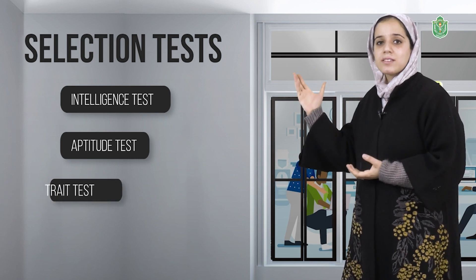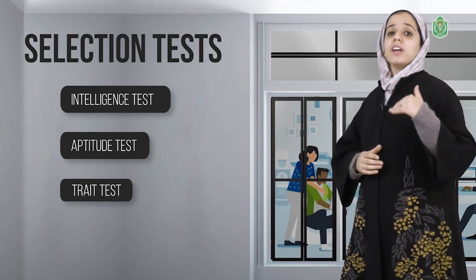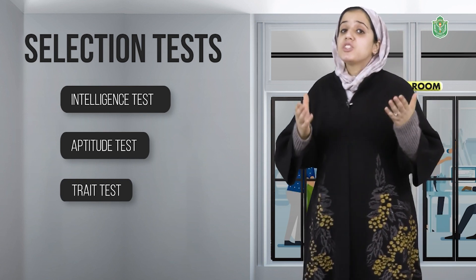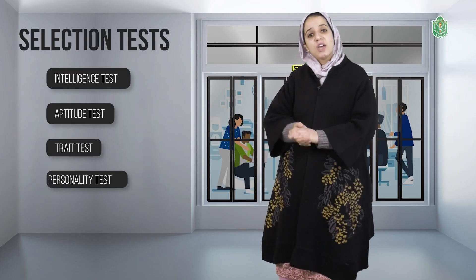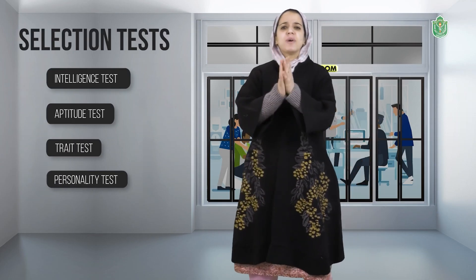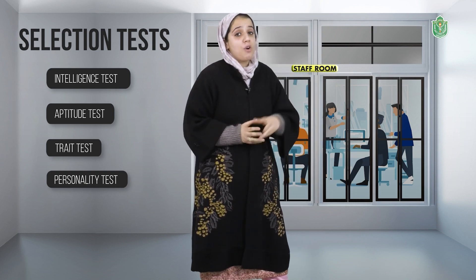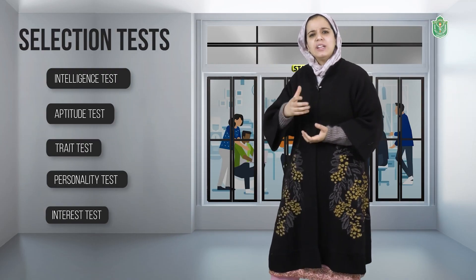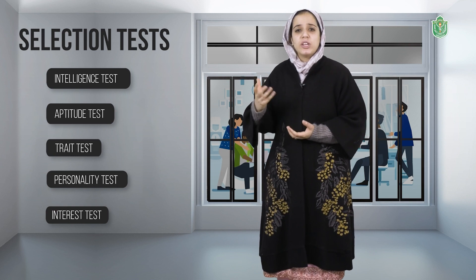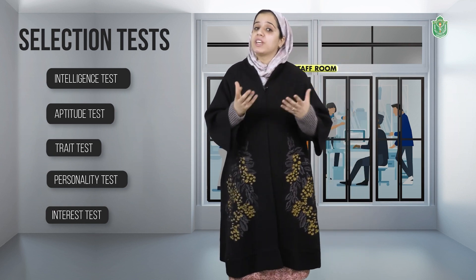Next is the trade test, which aims to judge the professional competency and job-related knowledge of the individual. Then is the personality test, which judges the values and the belief system of an individual. And the last is the interest test, which aims to measure the pattern of interest or involvement of an individual.